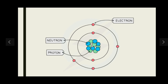Electrons are held in shells, represented as rings around the nucleus. It is important to understand that the maximum number of electrons a shell can hold varies: the first shell can hold up to 2 electrons, the second shell can accommodate up to 8 electrons, and the third shell can also accommodate up to 8 electrons. We will discuss electron arrangement further in upcoming videos.